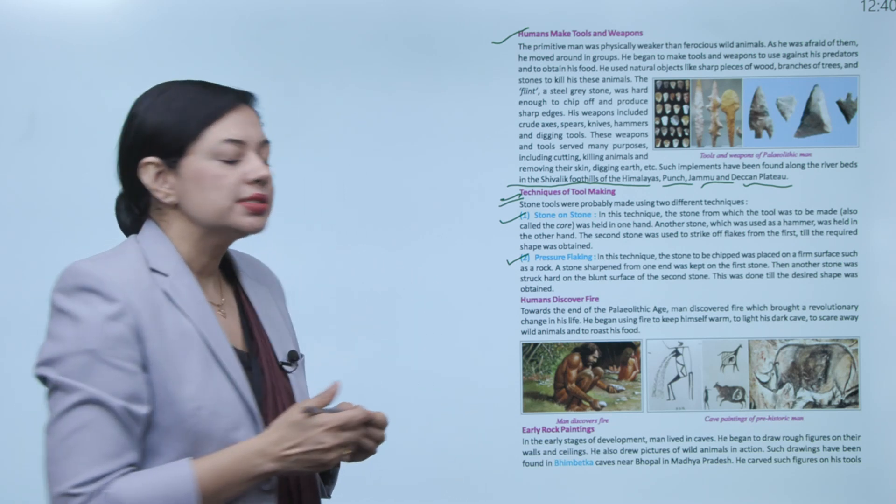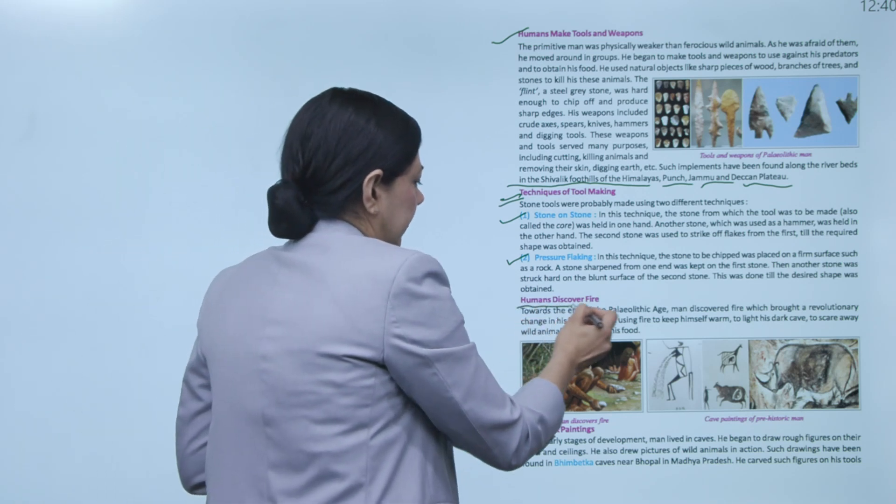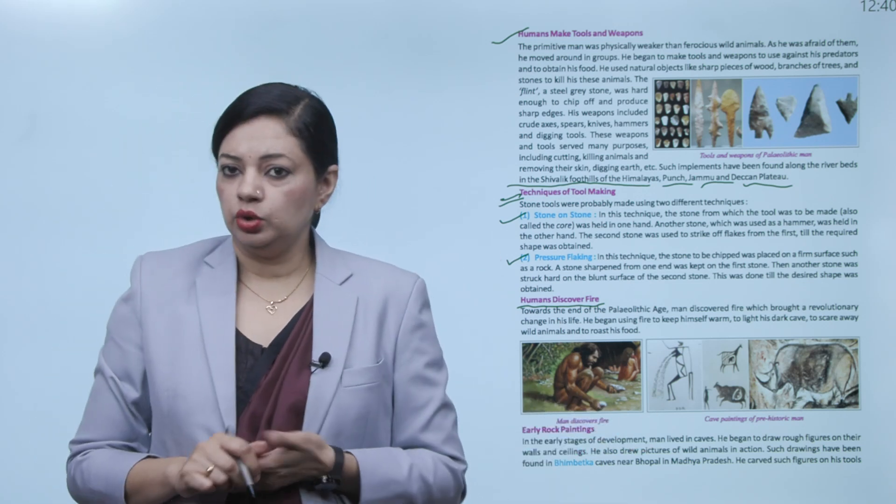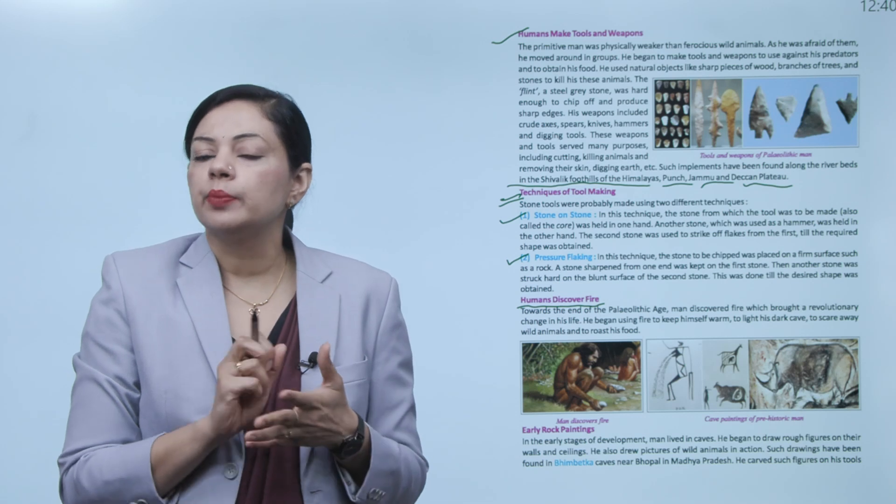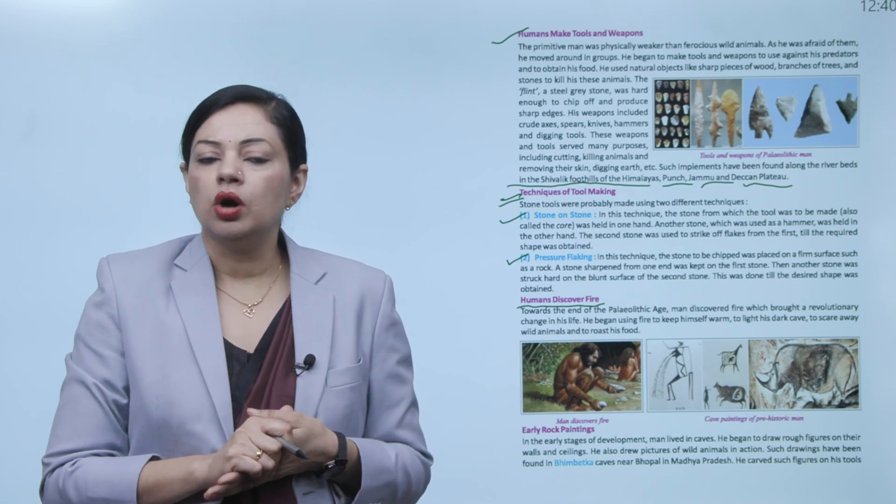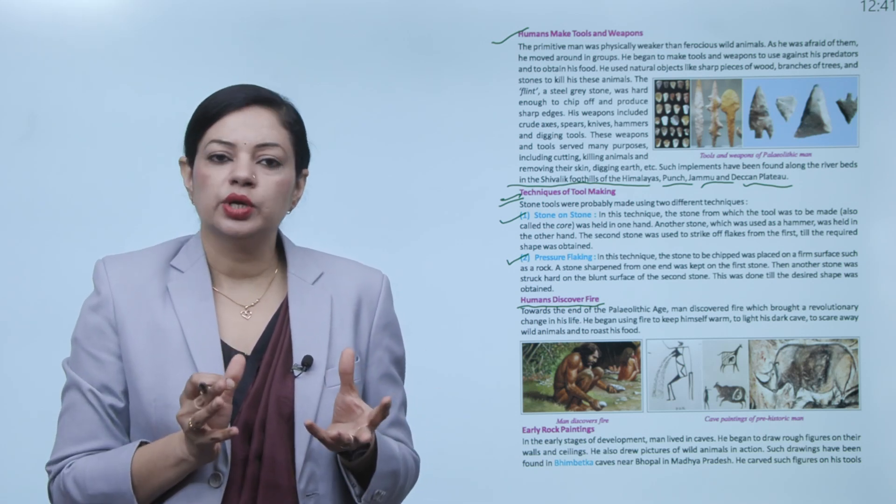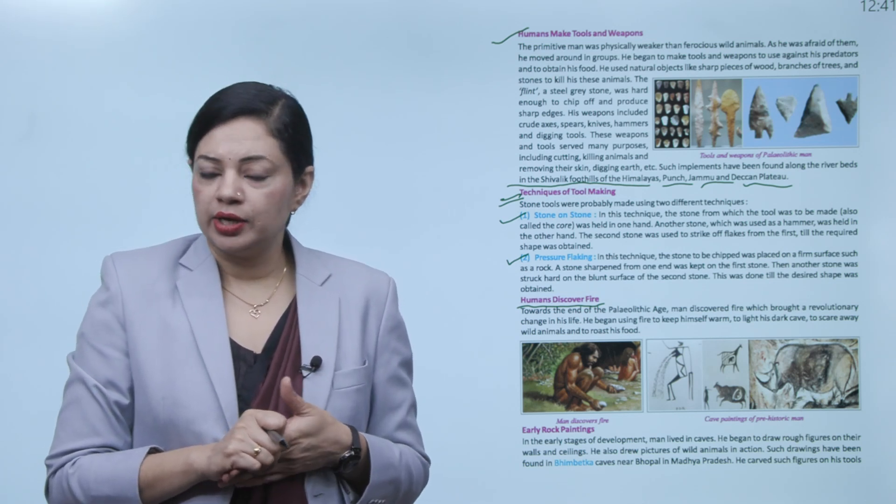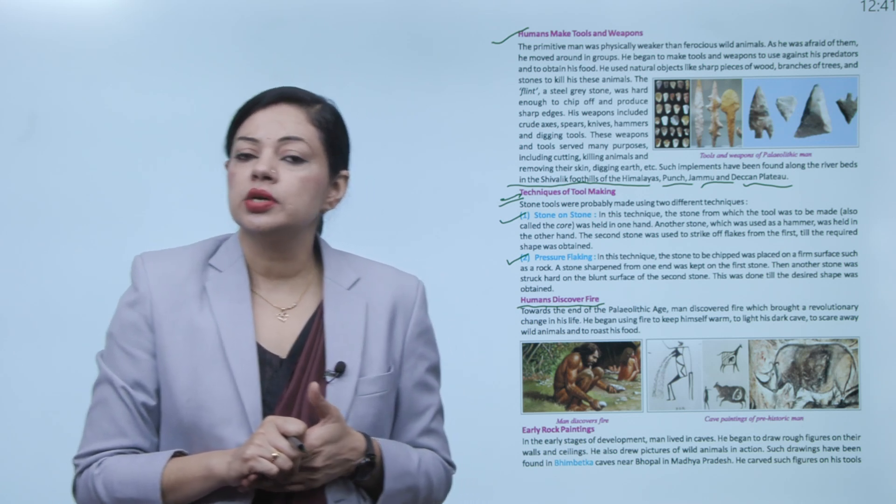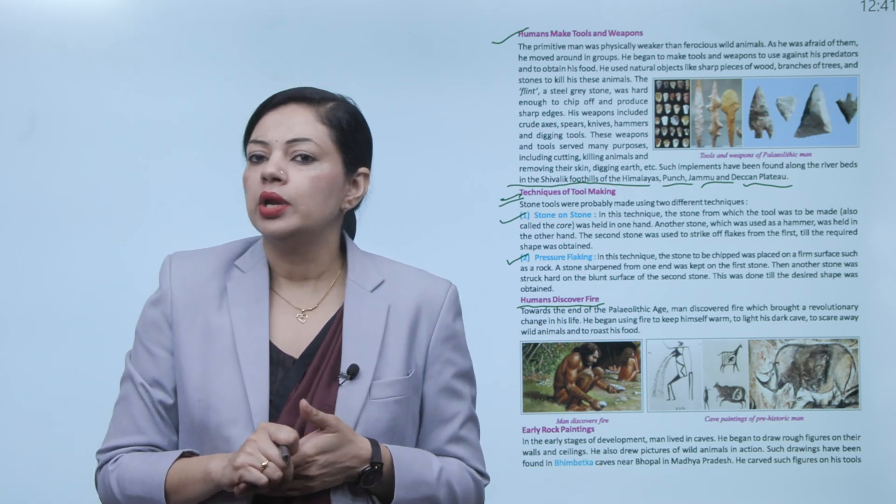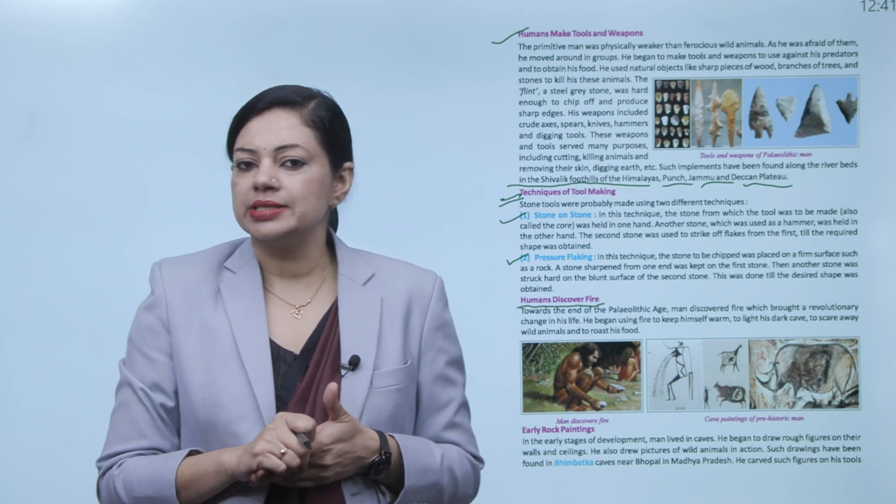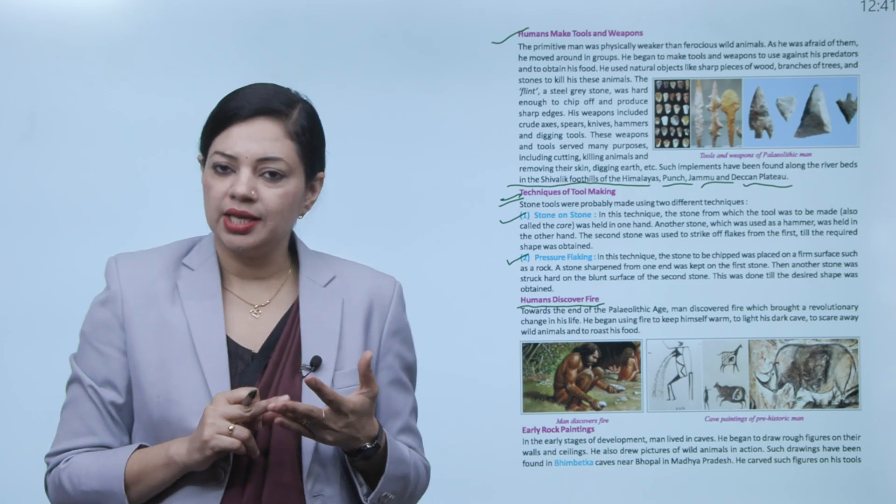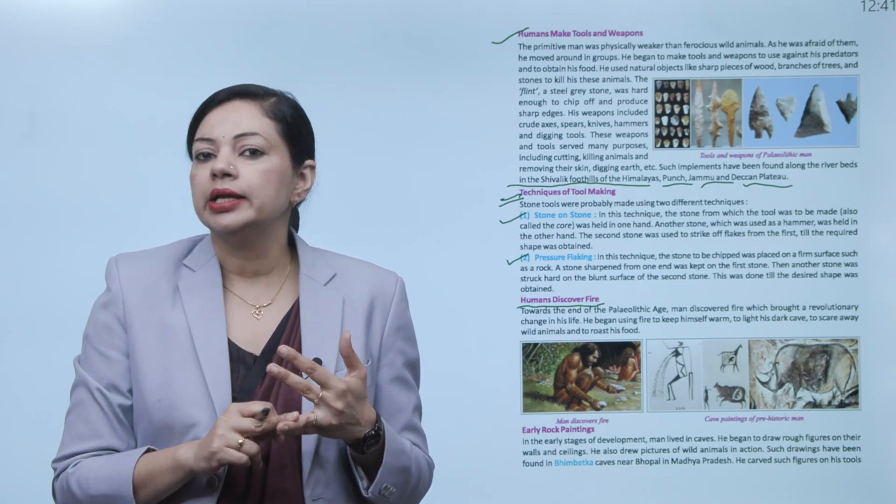Now humans discovered fire. How was fire discovered? As we just read about the techniques of tool making, maybe one day what happened was the tools were rubbing against each other and there were some dry leaves lying there, and fire caught on them. This way they discovered fire. Now they used fire to keep themselves warm, to light their dark caves, to scare away wild animals, and to roast their food.